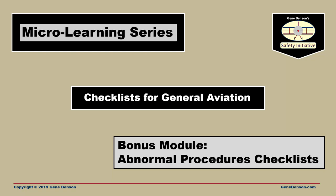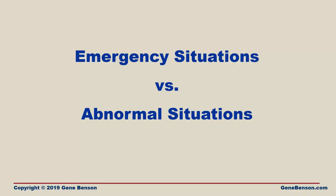Welcome to our micro-learning course about checklists in general aviation. Hopefully you have already completed Modules 1 through 3. This bonus module is concerned solely with abnormal procedures checklists. It is not essential, but I recommend that you view the modules in sequence. All of the modules can be accessed through my website, jeanbenson.com.